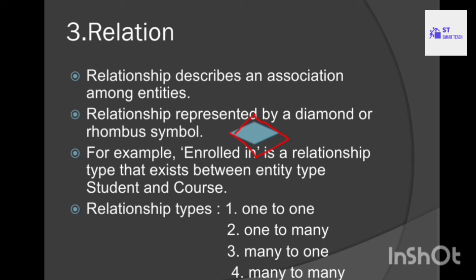Enrolled is a relationship between student and course. Student is one entity with properties like student number and student name. Course is another entity with properties like course ID and course name. Student and course are related by using the relation enrolled — student is enrolled in course, so one entity is related to another entity.